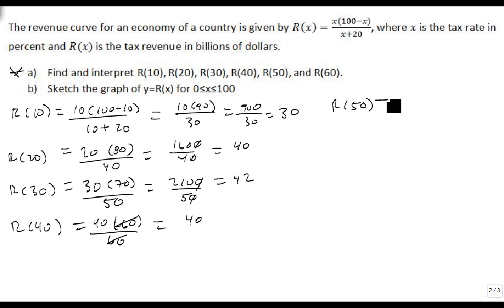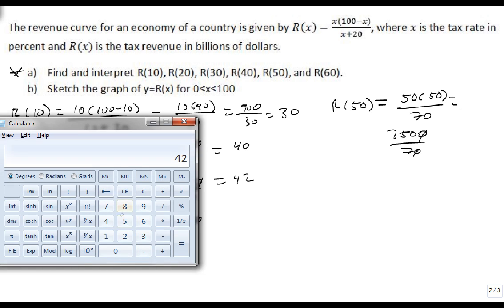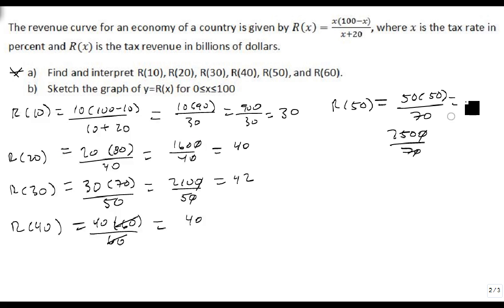R(50) is 50 times 50 over 70, so 2500 over 70. This one doesn't come out quite as nicely, so we get 250 divided by 7, which is 35.7. And R(60) is 60 times 40 over 80, which leaves 2, so 60 divided by 2 is 30.